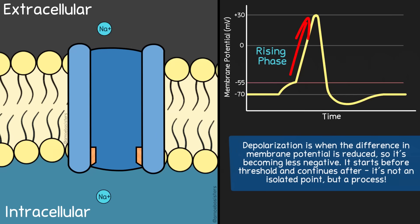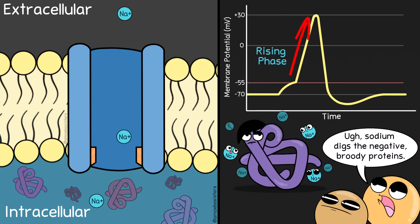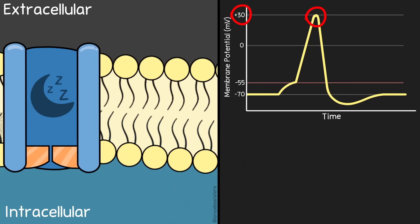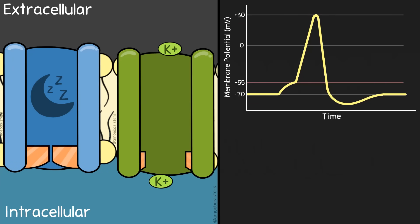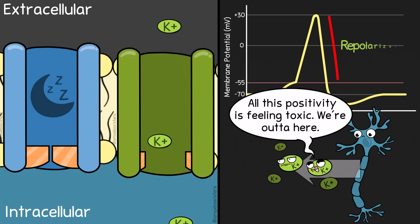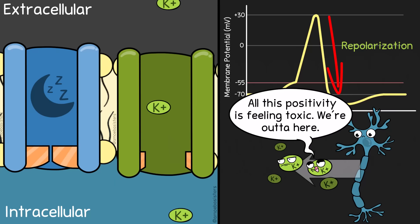Once the threshold level is reached, we enter the rising phase: depolarization causes most sodium channels to open, and lots of sodium rushes in. The membrane potential reaches zero but doesn't stop there, as sodium keeps entering — drawn in partly by the negative proteins inside the cell. When the membrane potential gets to around positive 30 millivolts, those gated sodium channels start to get inactivated, and gated potassium channels open. Potassium follows its concentration gradient and leaves the cell, resulting in repolarization, bringing the potential back down toward negative 70 millivolts.